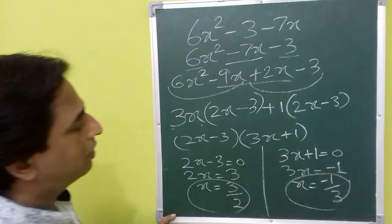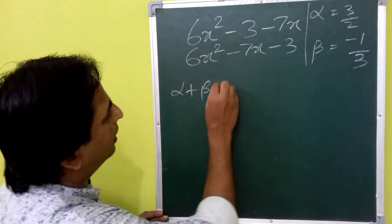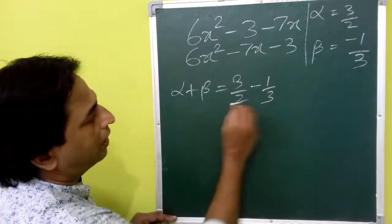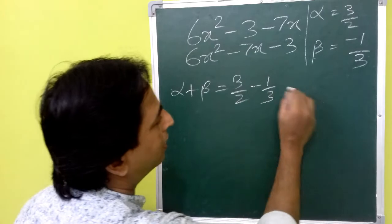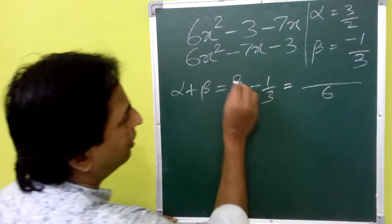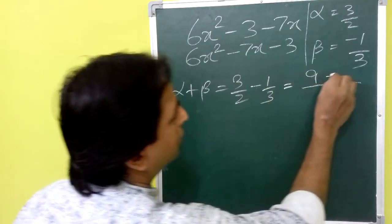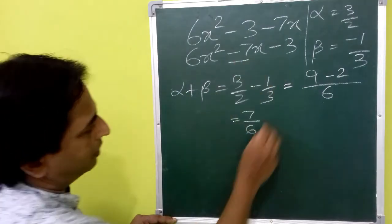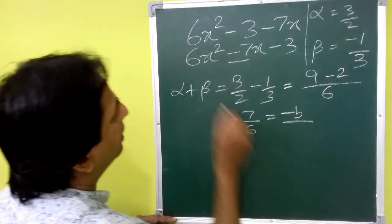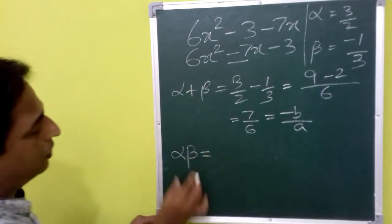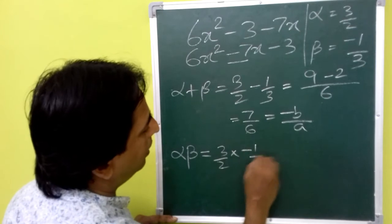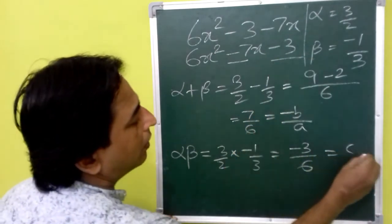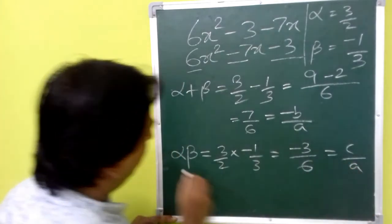Let us call them alpha and beta. Alpha plus beta equals 3 by 2 plus minus 1 by 3. Taking LCM as 6: 3 times 3 is 9 and 2 times minus 1 is minus 2, giving 7 by 6. This equals minus b by a, where b is minus 7 and a is 6. For the product: alpha times beta equals 3 by 2 times minus 1 by 3, which equals minus 3 by 6, equal to c by a. We have verified this relationship.